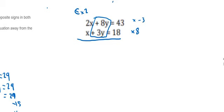Watch what happens then. On the top, you must multiply the whole top equation by minus 3. So I'm going to get minus 6x, minus 24y, equals minus 129. The bottom equation, if I multiply everything by 8 — positive 8 — I get 8x, plus 8 times 3 is 24, so 24y, equals 8 times 18, which is 144.